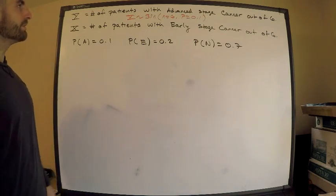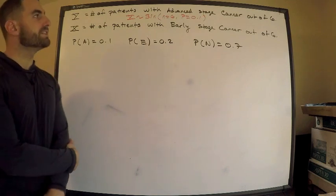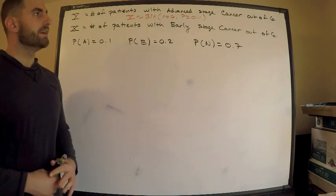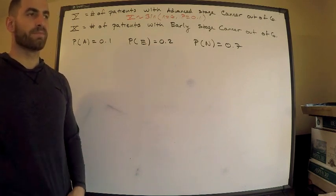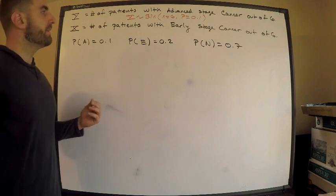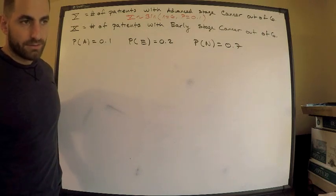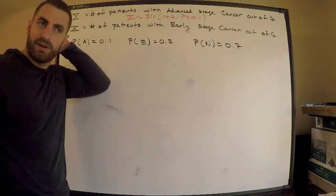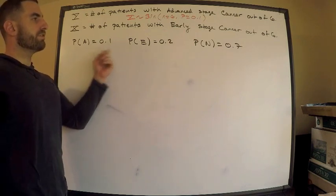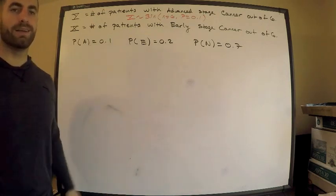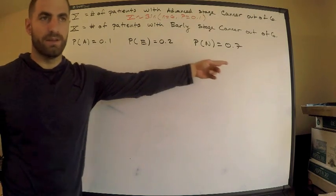This is the setup. My random variable Y is the number of patients with advanced stage cancer out of six. We have a population and we're choosing a random sample of six. X is the number of patients with early stage cancer out of six. We could also define another random variable, N, the patients without any cancer whatsoever. Here are the corresponding probabilities: event A is the probability an individual has advanced stage cancer, event E is early stage cancer, and N is no cancer.